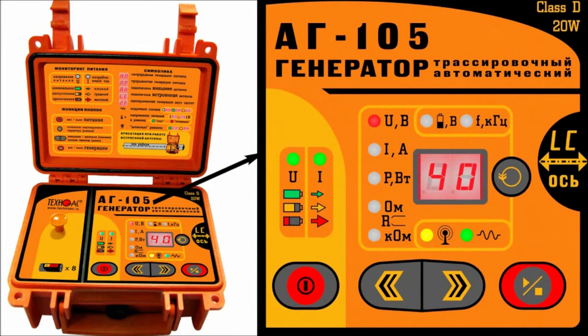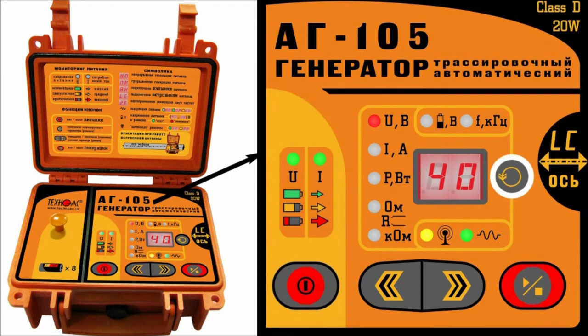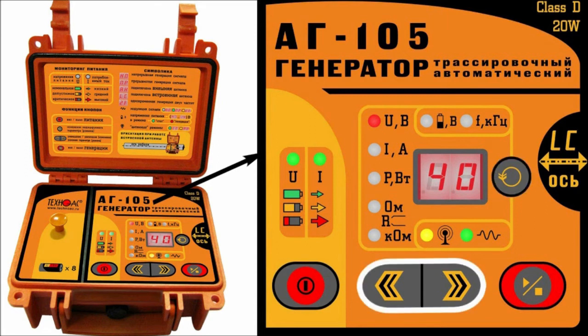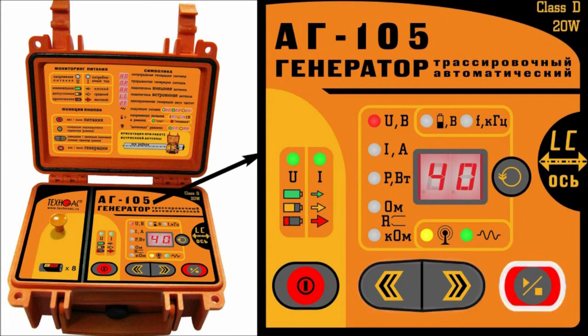The power button turns the device on and off. The select button switches the indicated value or mode on the numeric screen. Left-right buttons adjust the numeric value of the selected parameter. The start-stop button enables and stops the transmission of the signal.